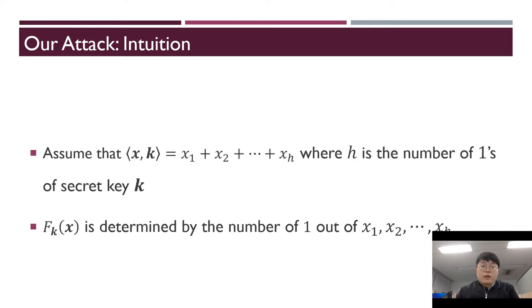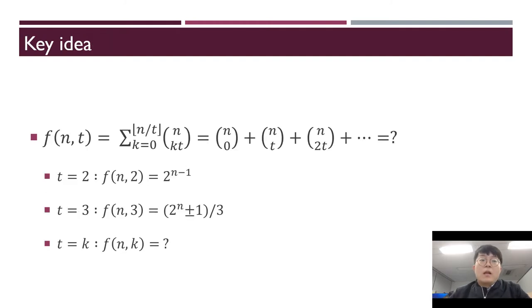Assume that the inner product of x and k is the sum of x_1, x_2, ..., x_h, where h is the number of 1s in secret key k. Then the output of weak PRF is determined by the number of 1s out of x_1, x_2, ..., x_h.